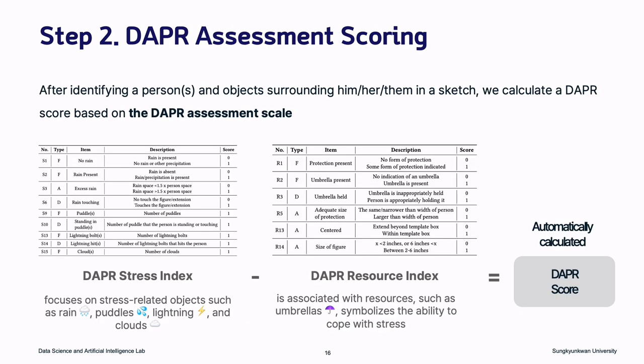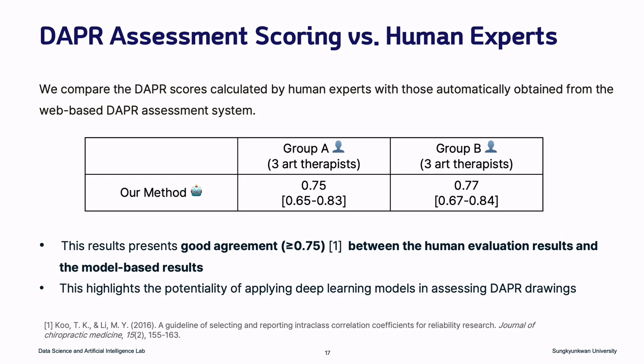After identifying objects in a sketch, we calculate a DAPR score based on the assessment scale. The DAPR assessment scale consists of the DAPR stress and resource index. We compare the DAPR score calculated by human experts with those automatically obtained from the proposed system. The inter-class correlation coefficient between the human and our system are 0.75 and 0.77 for each expert group, which shows good agreement. This highlights the potential of applying deep learning models in assessing the drawing assessment.